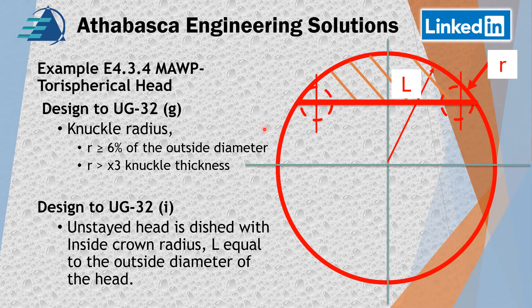Going to UG-32I, they talk about an unstayed head. If the unstayed head is dished with an inside crown radius where L is equal to the outside diameter, and you follow all those definitions, we have an ASME-type flange. An unstayed head means a head without reinforcing to make it stiffer — that's basically what it means.